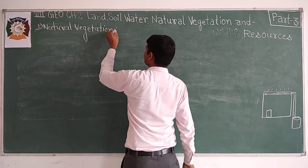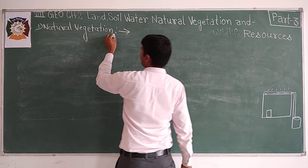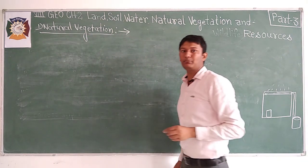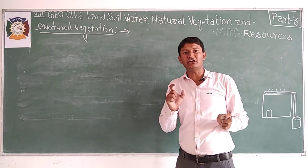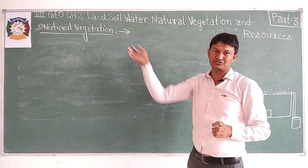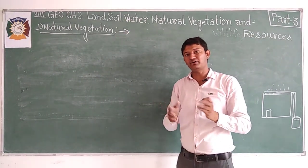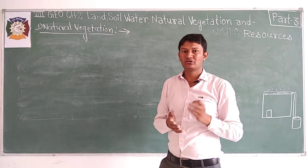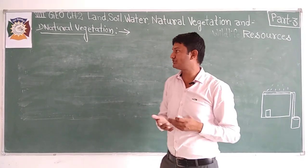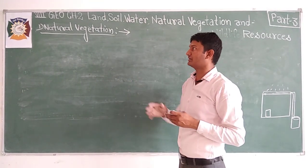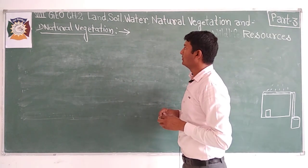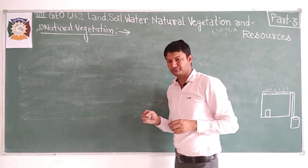Natural vegetation includes plants, herbs, and shrubs that grow without the help of human beings. There are different types of natural vegetation: forests, shrubs, and bushes.